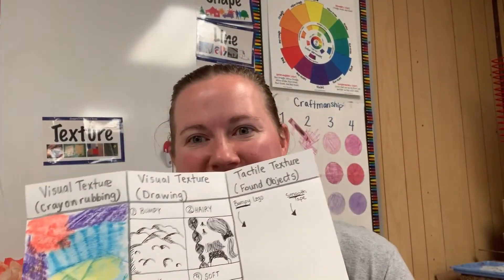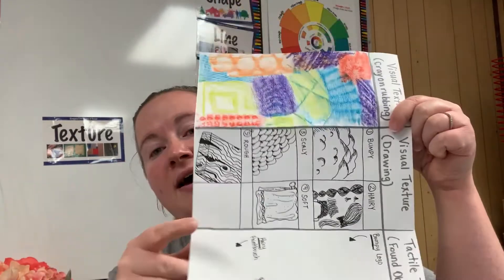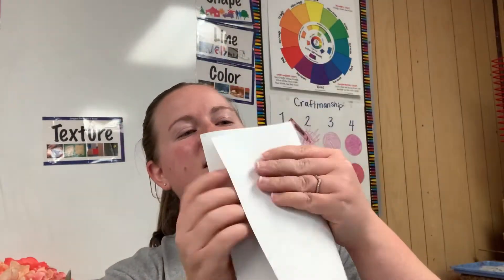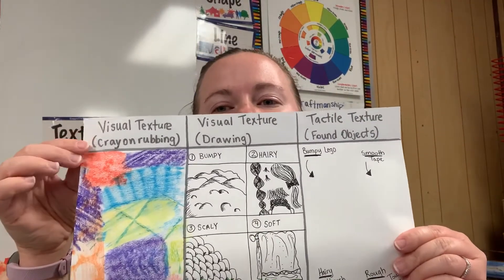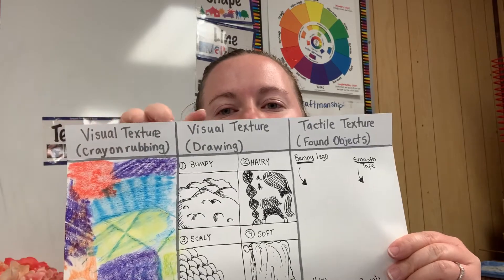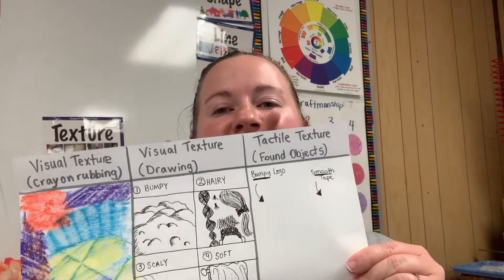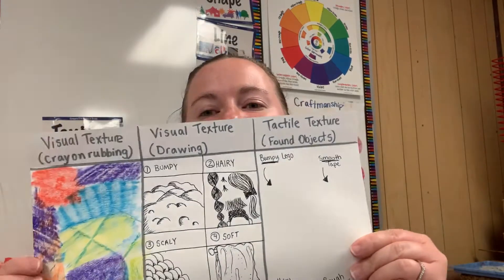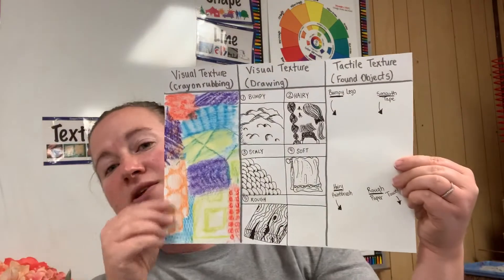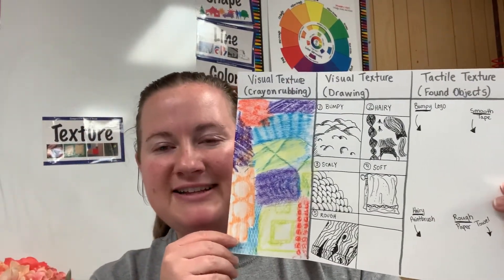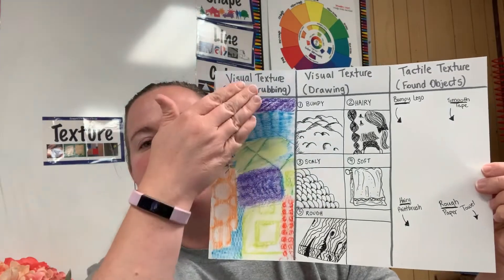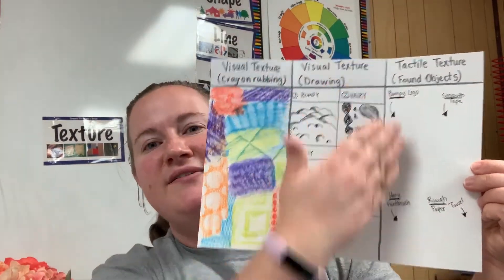So to get started, I want you to take your paper — whatever paper you have — and fold it into three sections. You're going to label your paper: visual texture with crayon rubbings, visual texture with drawing, and tactile texture with found objects. This creates three equal sections for you to work within. As you go through our playlist, you're going to see how we can progress through each section of textures.